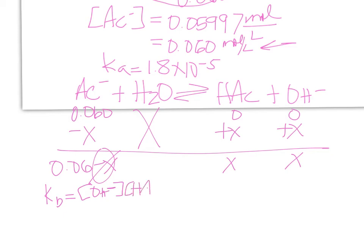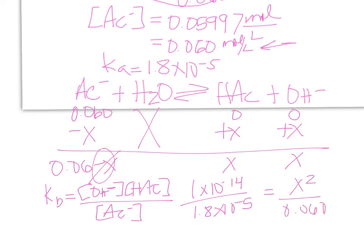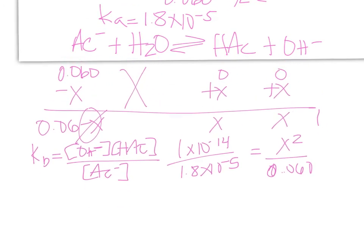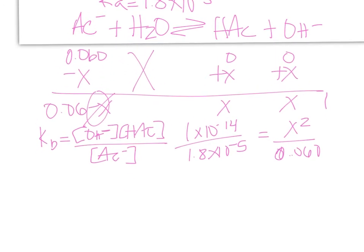You should not be surprised at that. Every hydrolysis problem requires that change. So we are given the Ka. So 1 times 10 to the negative 14 divided by 1.8 times 10 to the negative 5 is equal to X squared over 0.060. And when we solve,